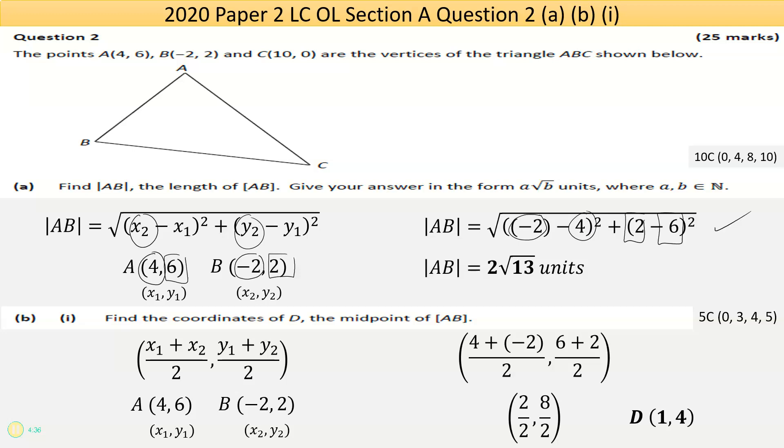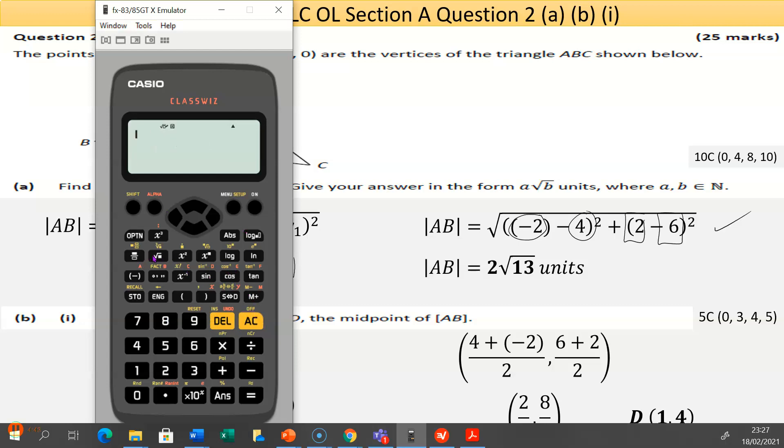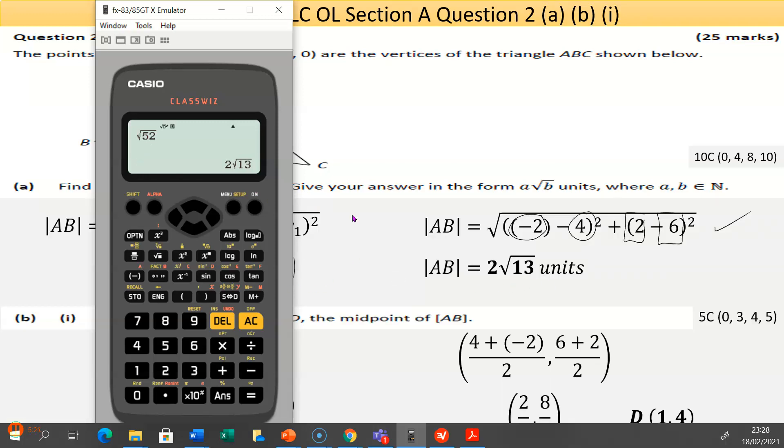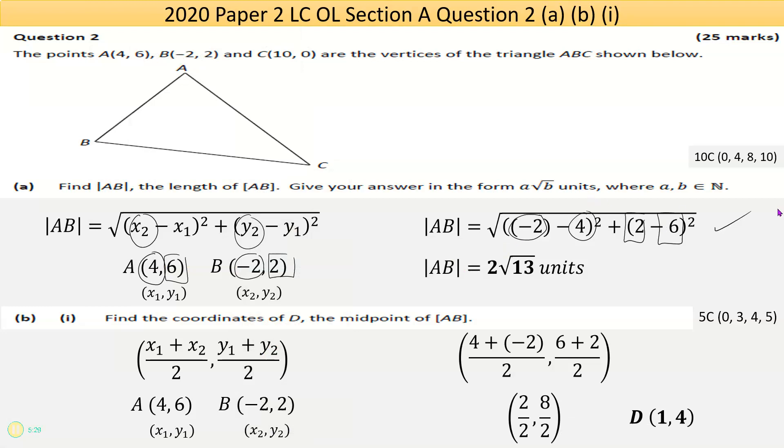I could put that through the calculator. So big square root, including all the brackets: negative 2 take away 4 squared, plus 2 take away 6 squared. If I press equal, I get 2 times the square root of 13, which is the square root of 52. That's the answer we got on the last page. The calculator automatically simplifies it, roughly around 7.2.